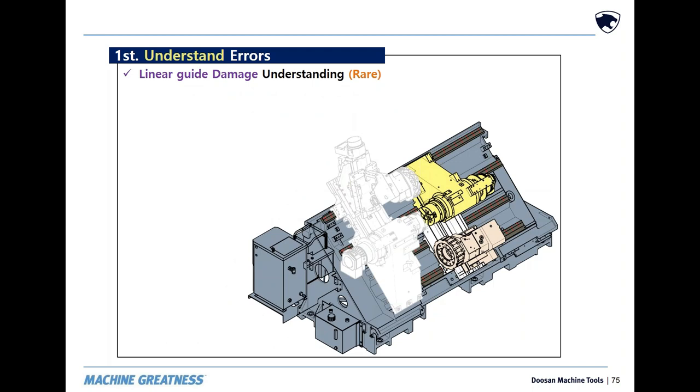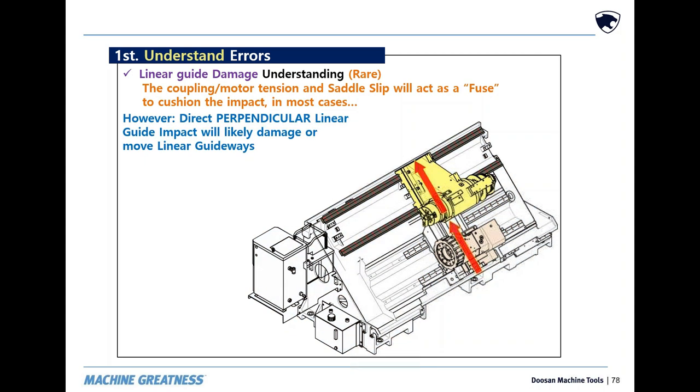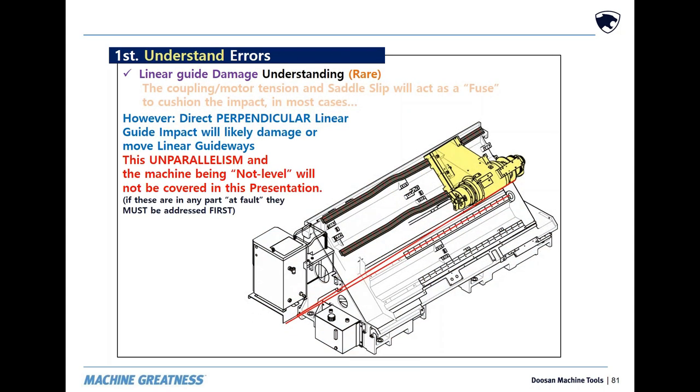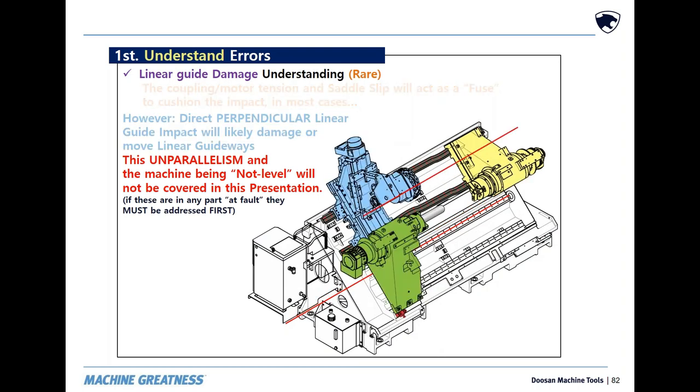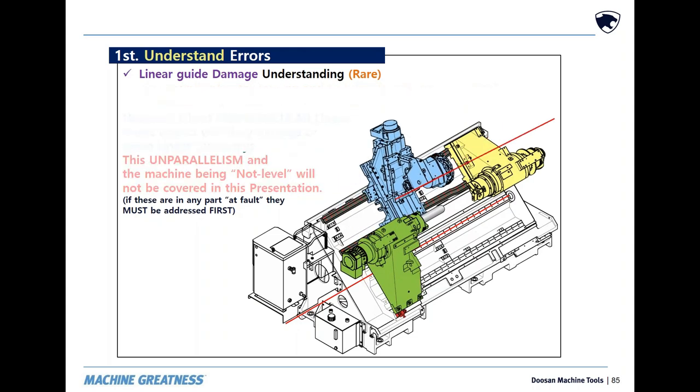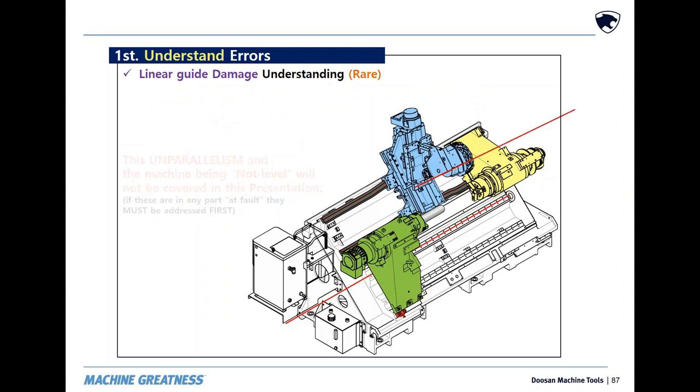On to linear guide damage. Motor coupling slip and more limit this. I've seen it in one instance: impact that is perpendicular to the sub-spindle's guideways. The sub-spindle would no longer travel parallel. And in this case, the non-crashed upper turret would cut erratic on a non-crashed main spindle. This can also happen on machines with an unstable foundation.